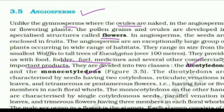Dicotyledons are characterized by seeds having two cotyledons, reticulate venation in leaves, and tetramerous or pentamerous flowers — meaning we will get to see four or five members in each floral whorl.